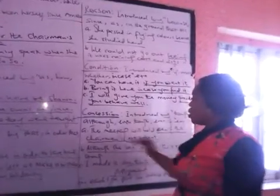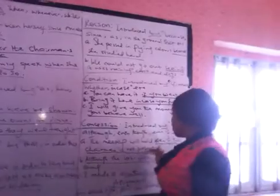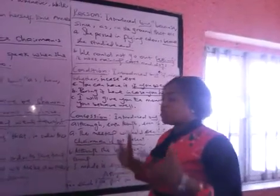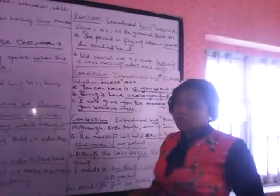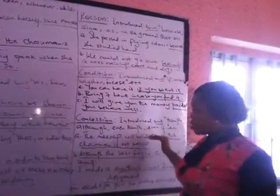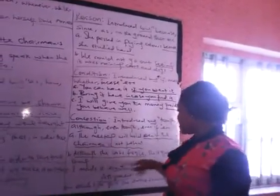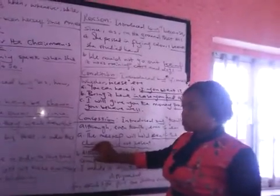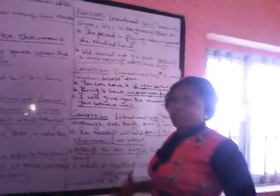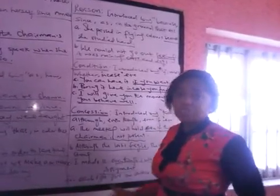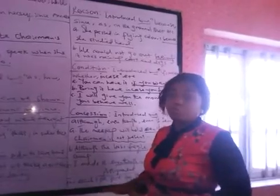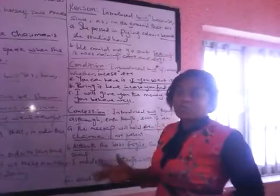Concession, introduced by 'though,' 'although,' 'even though,' 'even if,' and so on. Example: 'The meeting will be held even if the chairman is not present.' This is what happens away from the normal — the normal thing is for the chairman to be here before the meeting is held, but even if he is not around, you will still have the meeting. Another: 'Although she looks fragile, she is quite strong.' The normal expectation might be that she looks and acts strong. Another: 'I made it even though I was discouraged' — the normal result was not to make it, but you made it outside of the expectation.